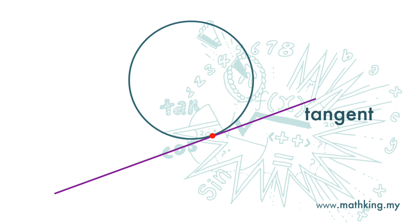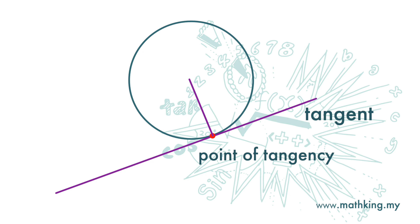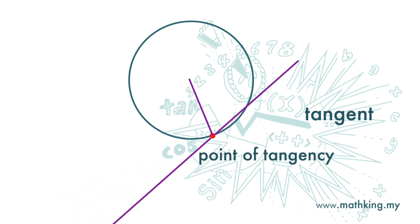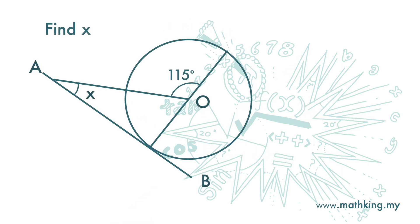We call this line a tangent to the circle. And the point where it touches the circle is called the point of tangency. One characteristic of a tangent to a circle is that it makes a 90 degrees angle with the radius of the circle at the point of tangency. If the angle is not 90 degrees, then the line will intersect the circle at two points. Let's look at a few questions that involve this characteristic.